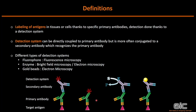In transmitted light microscopy and in electron microscopy, we can also use secondary antibodies coupled to enzymes that will degrade a substrate into a colored or dense product. And finally, in electron microscopy, one of the mainly used probes is a secondary antibody coupled to gold beads.